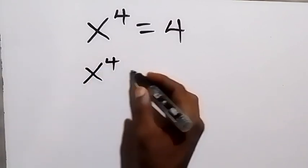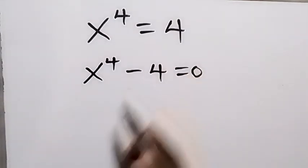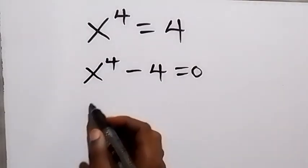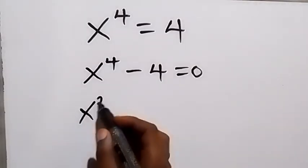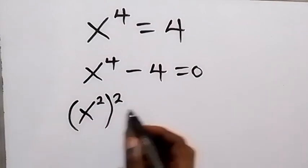to power 4 then minus 4, which is equals to 0. So positive will become negative. Then we can rewrite this in another way and we can write this as x squared then raised to power 2, because 2 times 2 we see 4.